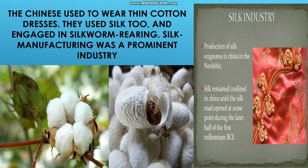Another main occupation was cotton growing and silkworm rearing. The Chinese wore thin cotton dresses and also used silk. Silk manufacturing was a prominent industry in Chinese civilization. The production of silk originated in China in the Neolithic age, and silk remained confined to China until the Silk Road opened during the later half of the first millennium BCE.